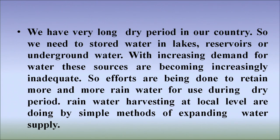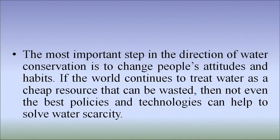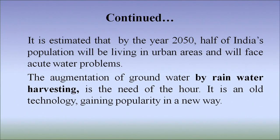Rainwater harvesting at local levels is done by simple methods of expanding water supply. The most important step in the direction of water conservation is to change people's attitudes and habits. If the world continues to treat water as a cheap resource that could be wasted, then not even the best policies and technologies can help solve water scarcity. It is estimated that by the year 2050, half of India's population will be living in urban areas and will face acute water problems. The augmentation of groundwater by rainwater harvesting is the need of the hour. It is an old technology gaining popularity in a new way.